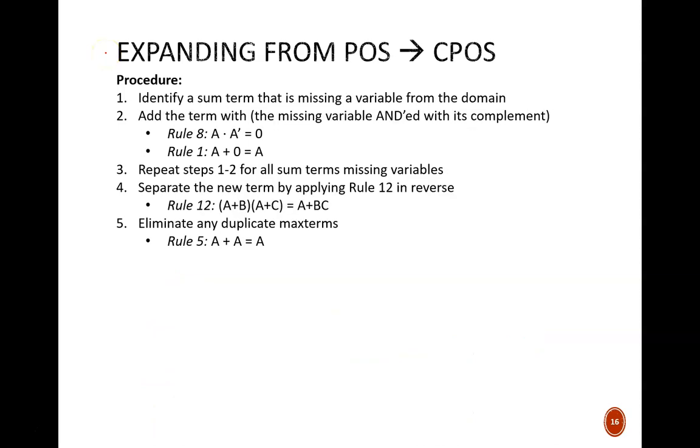We can do a similar thing with the product of sums form. Step one is identical. Identify any terms that are missing a domain variable. Step two is to include that missing variable by adding it ANDed with its complement to the sum term. Then repeat those steps for all missing variables. Next, and this is the strangest step for most people, separate the new term by applying rule 12 in reverse. Typically, we apply rule 12 from left to right, but in this procedure, we will take an expression like a or bc and convert it to (a or b) ANDed with (a or c). Lastly, as we saw before, eliminate any duplicate terms that remain.